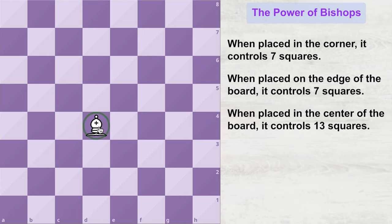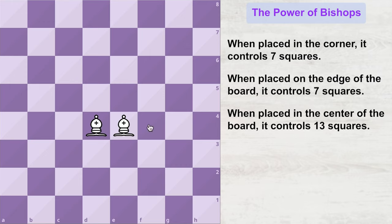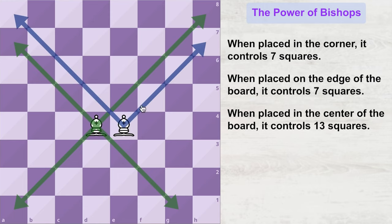This dark squared bishop would be able to travel anywhere on the 32 dark squares of the board — because on a chess board we have 32 dark squares and 32 light squares. This bishop can control or travel on the 32 dark squares, and the light squared bishop can travel anywhere on the remaining 32 light squares. So when both bishops work together, they form a great team, covering all diagonals on the board.